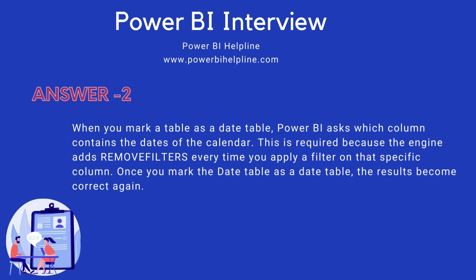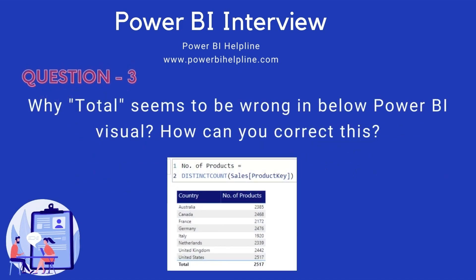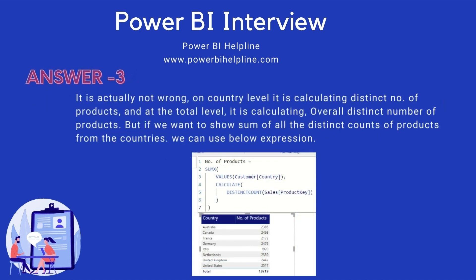Alright, let's move on to the next question. Why does the total seem to be wrong in the below Power BI visual, and how can you correct this? The answer is, it is actually not wrong. On the country level it is calculating the distinct number of products, and at the total level it is calculating the overall distinct number of products. But if we want to show the sum of all the distinct counts of products from the countries, we can use the below expression, which will first calculate all the distinct number of products, and the SUMX function will iterate over the table to aggregate the sum of all these values.